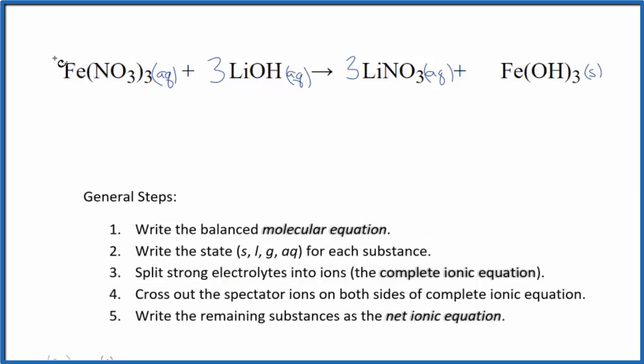So iron, we don't know the charge on that, but we know that the nitrate ion, that's always one minus. Good one to remember. 3 times 1 minus, that's 3 minus, has to be 3 plus. So we have iron, 3 plus, and I won't write the states now. Let's do that at the end. 3 of these nitrate ions. So 3 NO3 minus for the nitrate ions.